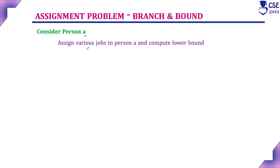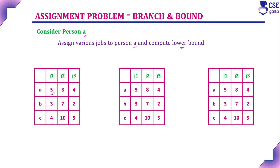Next, consider person A and assign various jobs. Here three jobs are given. For person A, assigning job number 1 has a cost of 5. For the same row and same column, you should not assign to any other person. For person B in the second row, the minimum cost among remaining is 2, and for person C in the third row, the minimum cost among remaining jobs is 5. So the lower bound value when assigning job 1 to person A is 12.